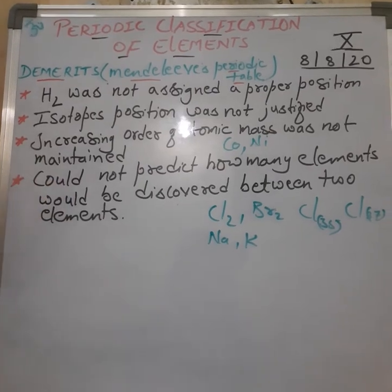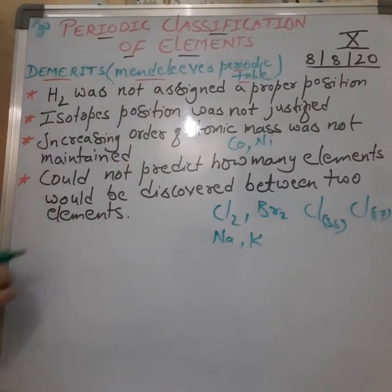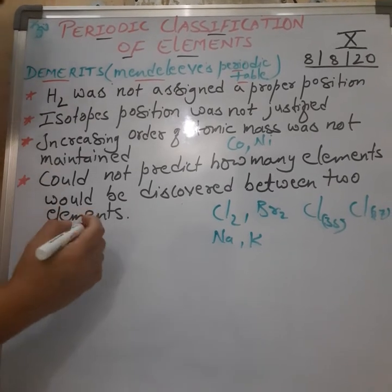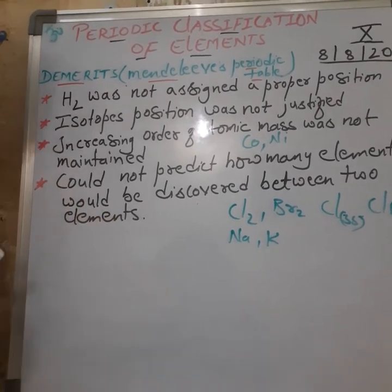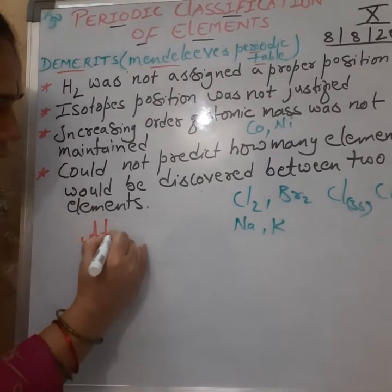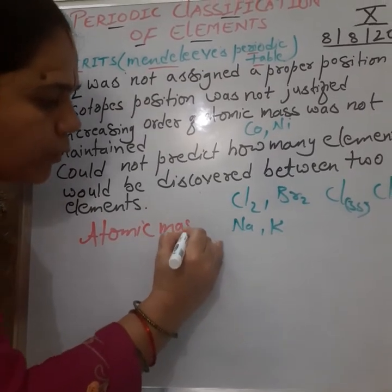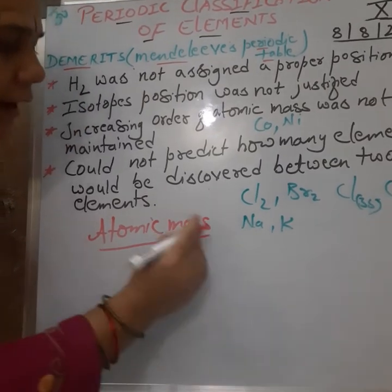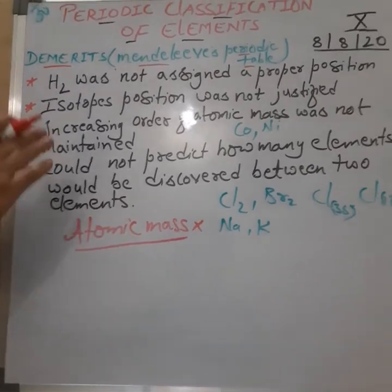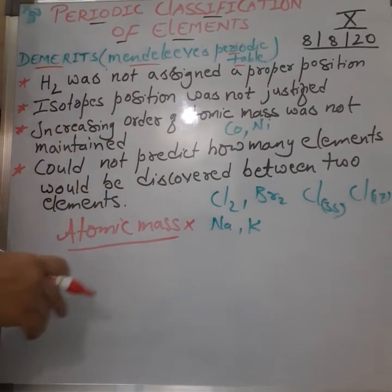So these were the major drawbacks. The conclusion drawn from these demerits was that atomic mass cannot be the criteria for classification or arrangement of elements, because atomic mass does not increase in a set pattern or set amount.